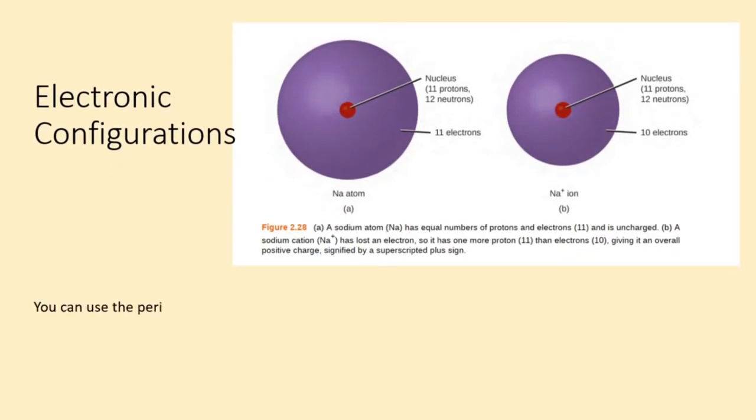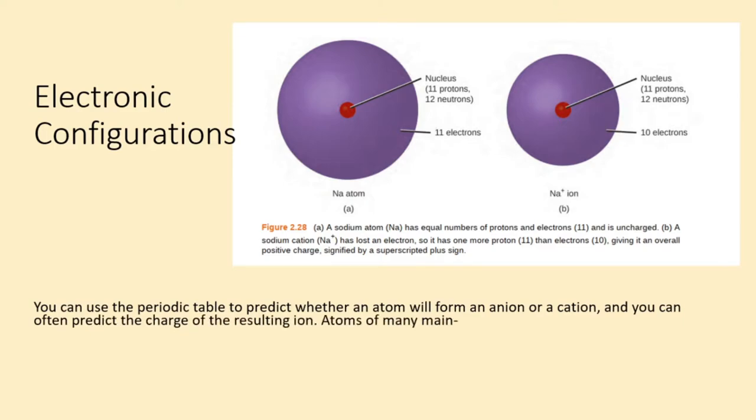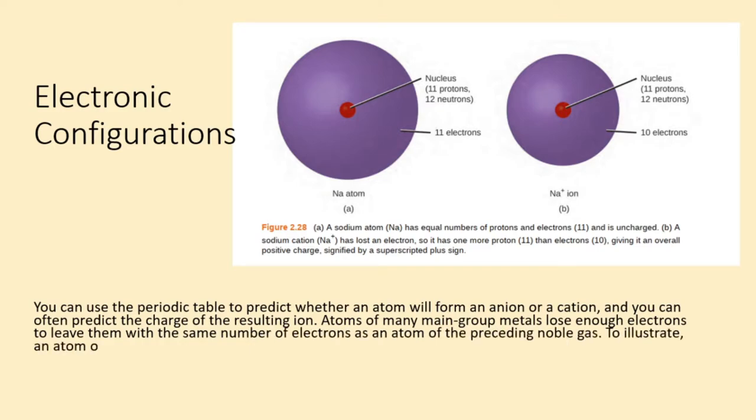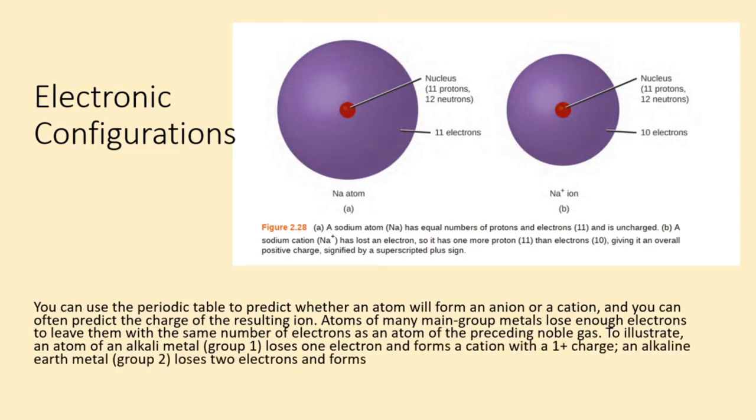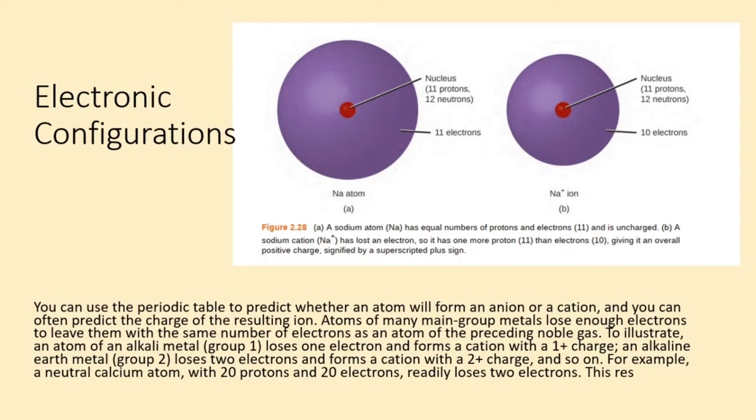You can use the periodic table to predict whether an atom will form an anion or a cation, and you can often predict the charge of the resulting ion. Atoms of many main group metals lose enough electrons to leave them with the same number of electrons as an atom of the preceding noble gas. To illustrate, an atom of an alkali metal, group 1, loses one electron and forms a cation with a 1+ charge. An alkaline earth metal, group 2, loses two electrons and forms a cation with a 2+ charge, and so on.